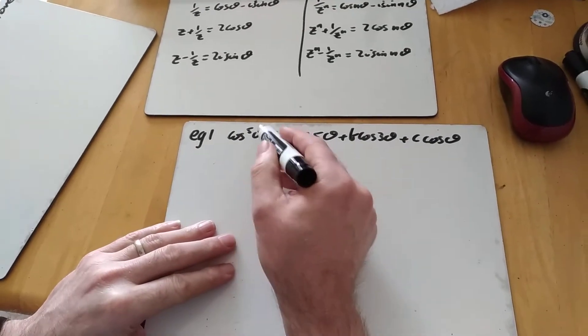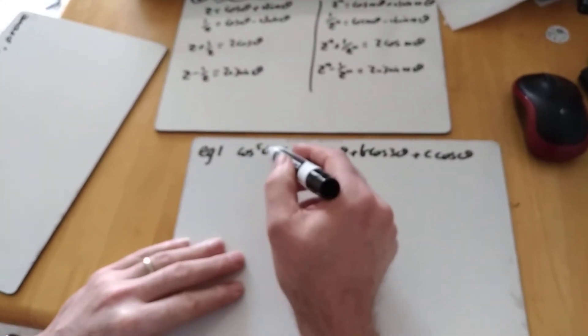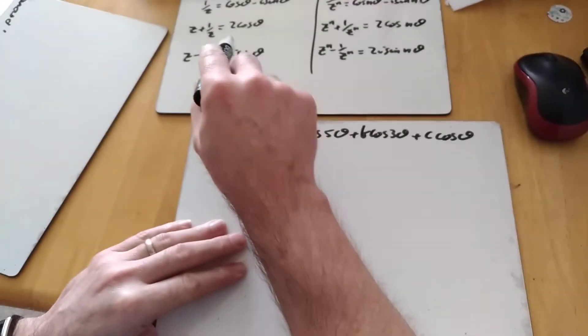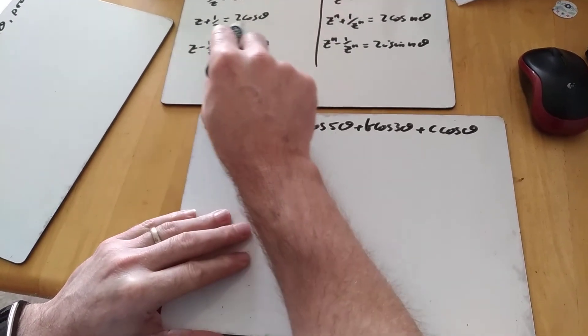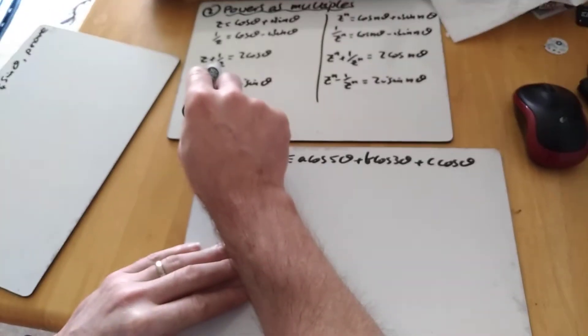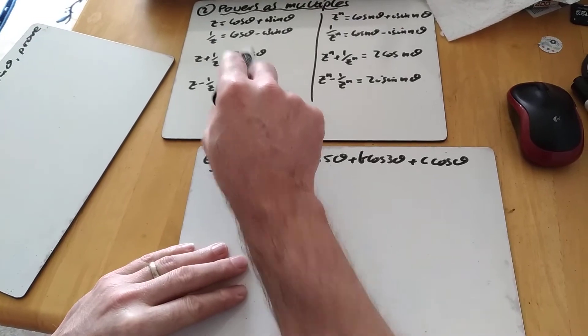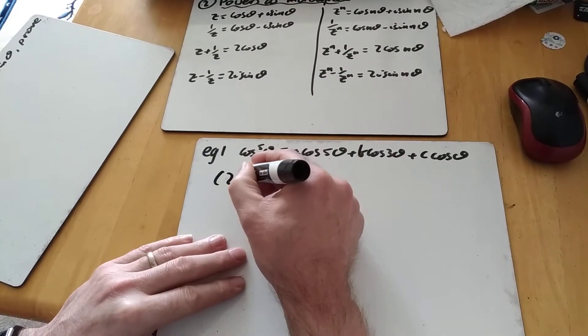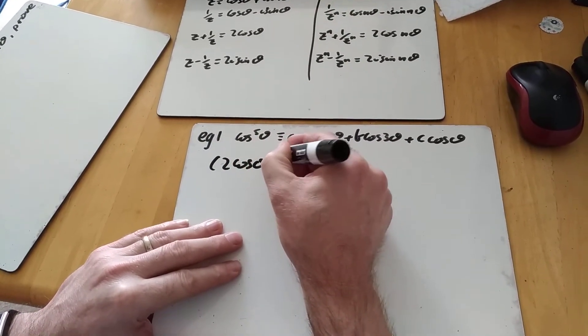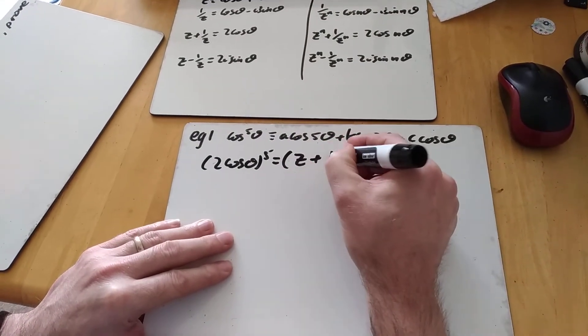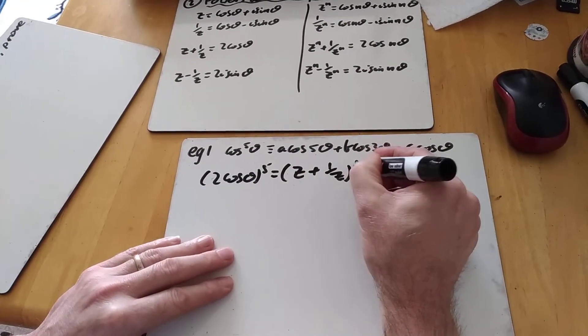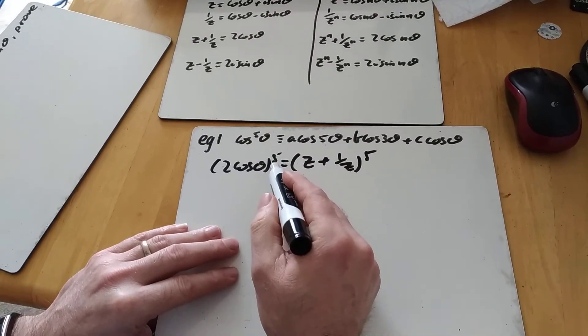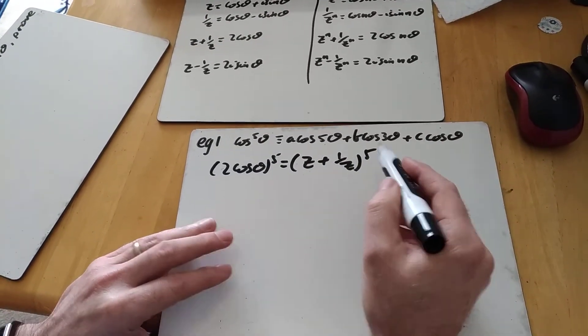So how do I go about it then? Since I want this idea here, cos to the power of 5 theta, I'm going to take this expression, z plus 1 over z equals 2 cos theta and raise it to the power of 5. So I've got 2 cos theta to the power of 5 equals z plus 1 over z to the power of 5.